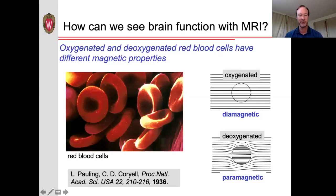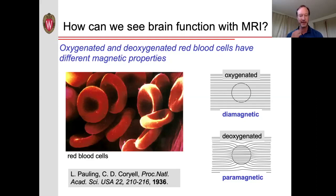This has actually been known for quite some time — it was discovered first by Linus Pauling back in 1936. The reason for this change in magnetic property is that if you look at a hemoglobin molecule, it has iron in the center of it. When oxygen is bound to the hemoglobin molecule, it shields the surrounding water from seeing that iron directly. In contrast, if there's no oxygen bound to the red blood cell, the surrounding water can more easily see that iron atom, and as a result, it really messes up the magnetic field.